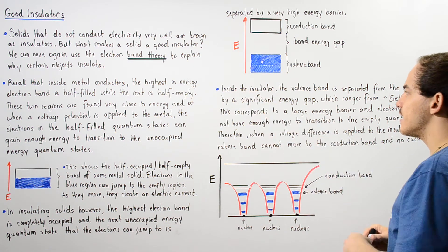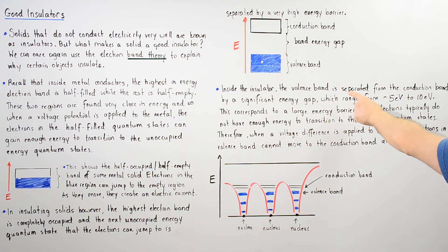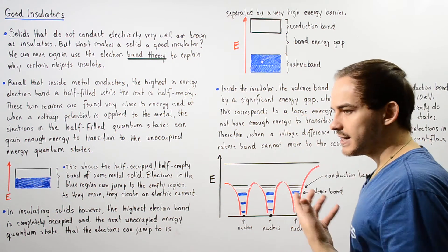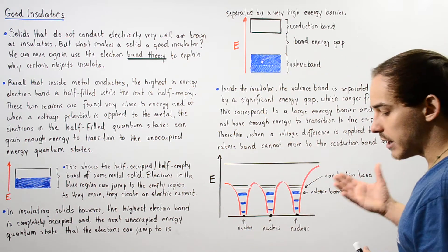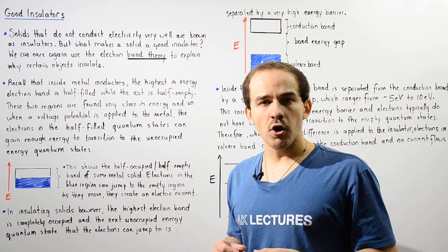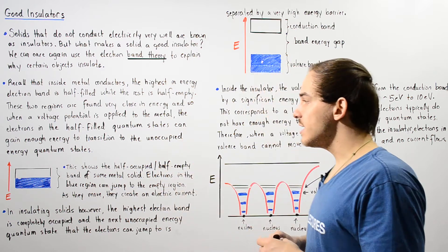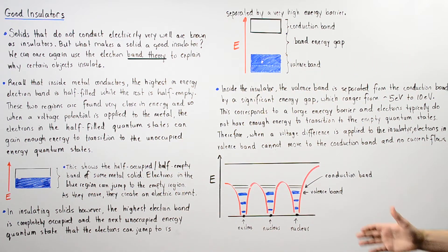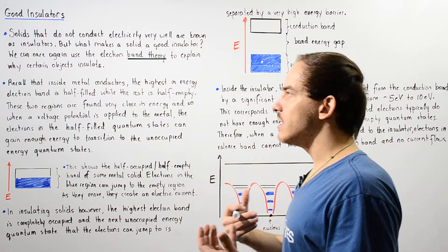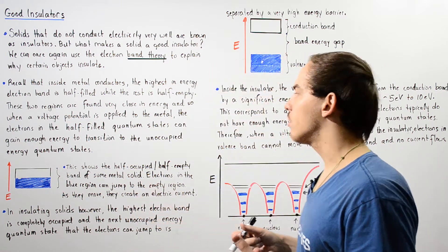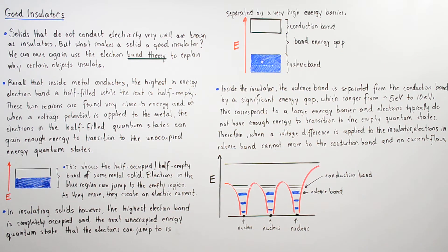Inside the insulator, the valence band is separated from the conduction band by a significant energy barrier. This can range from five electron volts to ten electron volts, depending on the material being described. This corresponds to a very large energy barrier, so electrons cannot typically gain enough energy when we apply our electric potential difference, and so electric current cannot actually flow.